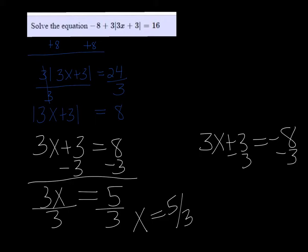Subtract 3 on the other one, and I get 3x is equal to negative 11, divide by 3, x is equal to negative 11 thirds. Here it should be 3x.